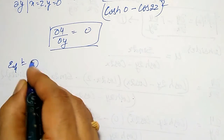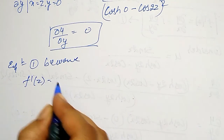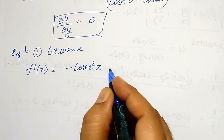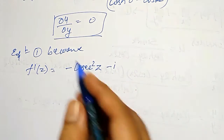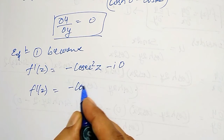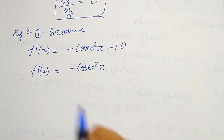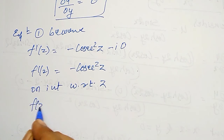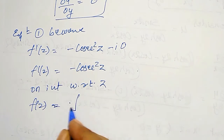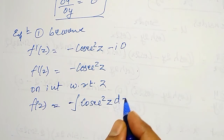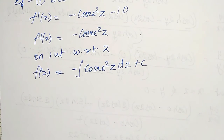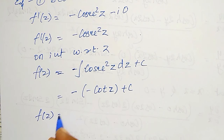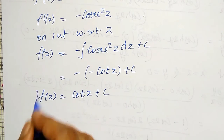Finally, equation 1 becomes: f'(z) = ∂u/∂x − i·∂u/∂y = −cosec² z − i·0 = −cosec² z. But this is f'(z), and I want f(z). On integration with respect to z: f(z) = ∫(−cosec² z) dz + c. The integral of −cosec² z is −(−cot z) = cot z. Therefore f(z) = cot z + c. Integrations you have to remember the formula.